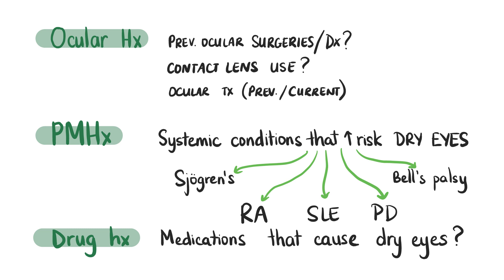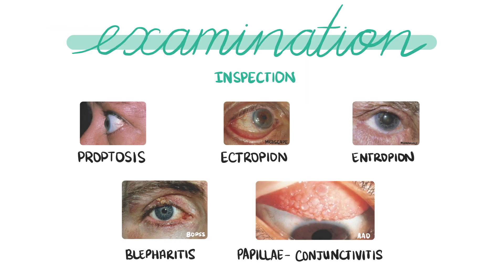In the drug history, look out for use of medications like anticholinergics, beta blockers, diuretics, antidepressants, or isotretinoin, which can all cause dry eye. The first step of any clinical examination is general inspection — look at the patient as a whole. You may see signs that the patient has a systemic disease like rheumatoid arthritis or Sjögren's, which will help you identify the cause of the dry eye syndrome.